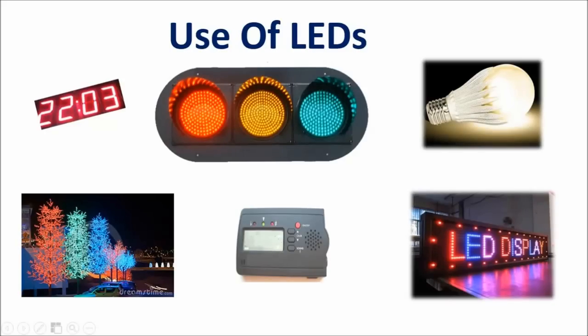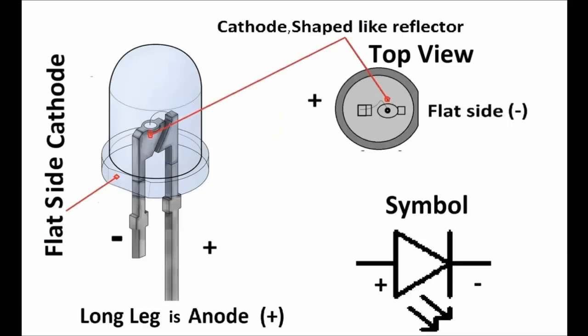It is used as an indicator, as traffic lights, and has plenty of other uses. It has two legs: one is anode, the longer leg, and the other leg is cathode or negative leg. It is on the flat side of the LED. Generally this symbol is used to make a schematic of LED.